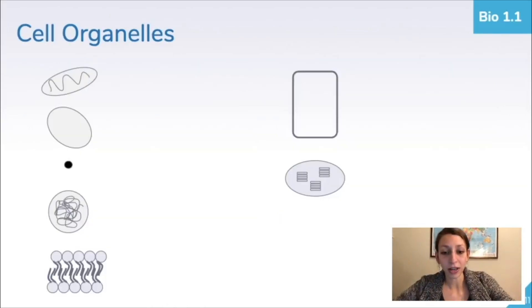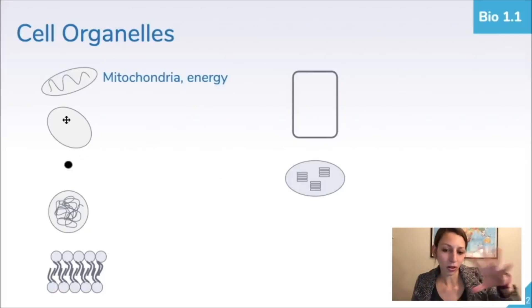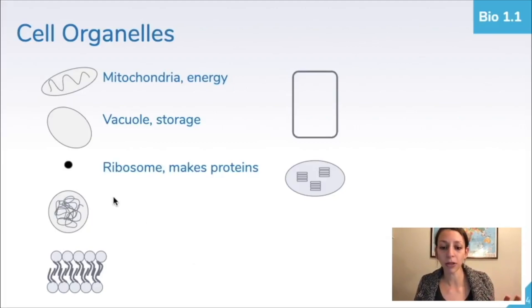So recognizing our organelles by picture, again, here's our simplified mitochondria. This is for energy, so you need to be able to understand that the mitochondria is where the cellular energy is created or made in a process called cellular respiration. You need to know more than just the mitochondria is the powerhouse of the cell. Here are simple circles with kind of a blank space in them. That would be a vacuole, which again is for storage.